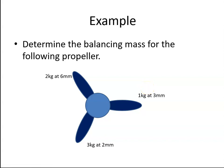We're asked here to determine the balance mass for the following fictitious propeller. So we have a three-bladed propeller. Blade one is one kilogram at three millimeters from the center of gravity. Blade two is two kilograms at six millimeters, and blade three is three kilograms at two millimeters. This is obviously not a real-life situation - you wouldn't get this disparity in the values, but it's just good as an example.